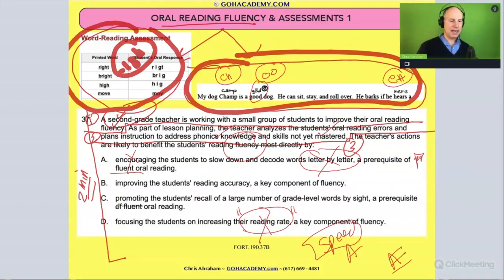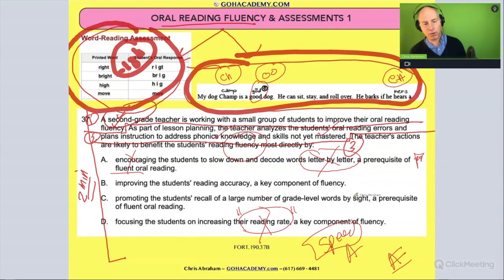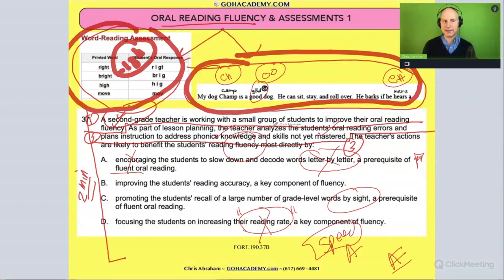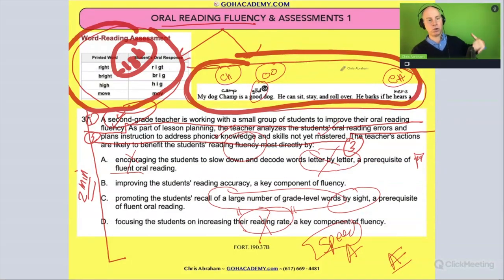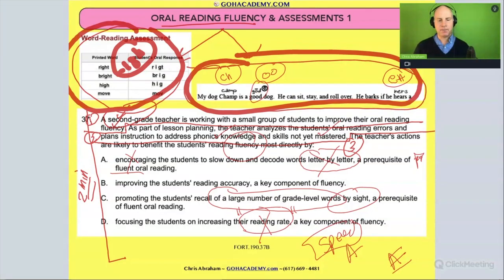Choice C: 'Promoting the student's recall of a large number of grade-level words by sight — a prerequisite of fluent oral reading.' Building sight word vocabulary is important, but this activity of fixing the phonics errors we're spotting isn't going to directly help with that. Eventually, words will become part of their high-frequency vocabulary, but that's not directly connected to this activity.